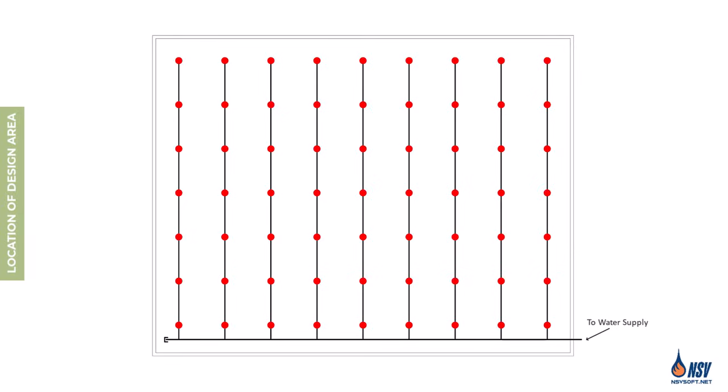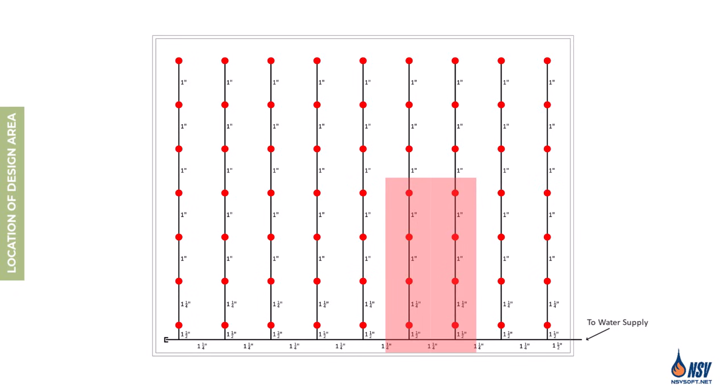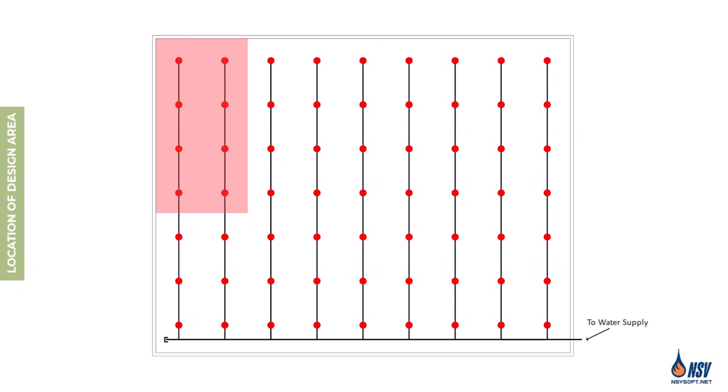Another important aspect of the design area is its location. The ultimate goal of defining the design area is to determine appropriate pipe sizing, ensuring the sprinkler system can effectively control the fire based on the available pressure and flow rate from the water supply. If we select the design area near the water supply and size the pipes based on that location, the system may fail to perform if a fire starts farther away, because the sprinklers may not receive enough pressure to discharge the required amount of water. That's why, like many other engineering disciplines, we follow a worst-case design approach. NFPA 13 requires that the design area be located in the hydraulically most remote part of the system.